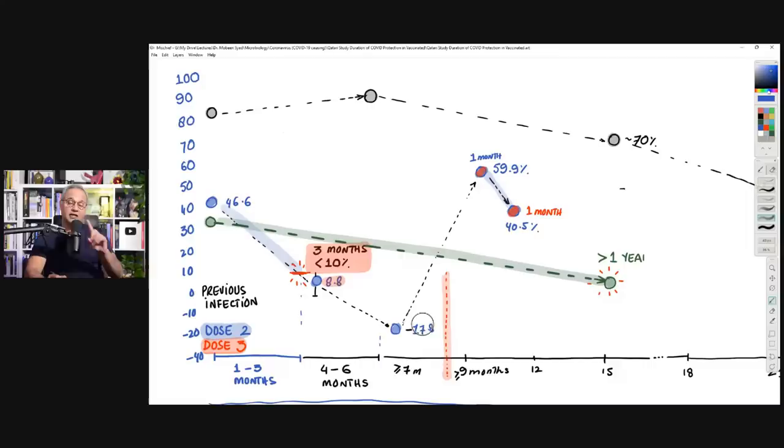If somebody gets a booster, the third dose, they jump from wherever they are to about 60 percent. That's a big jump. But check this out, within one month, effectiveness drops by 20 percent, down to 40, and that trend continues. Within two to three months, they are back to zero. This is for the symptomatic COVID, not for severe.